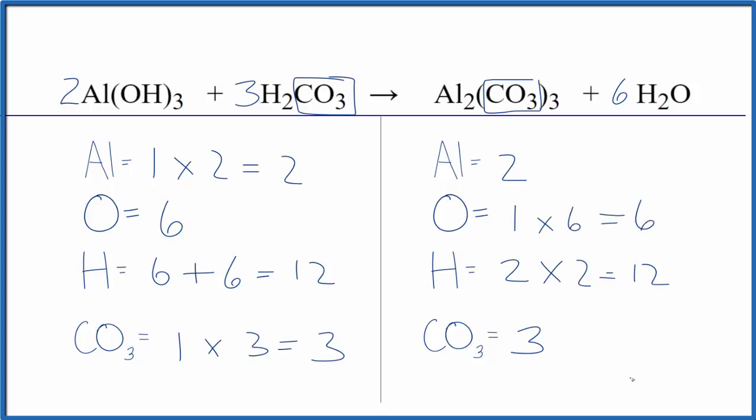The keys here, if you have a polyatomic ion on both sides, count that as one thing. That makes it a lot easier. And it's usually useful to leave the oxygens and hydrogens to last when you're balancing equations. This is Dr. B with the balanced equation for aluminum hydroxide plus carbonic acid. Thanks for watching.